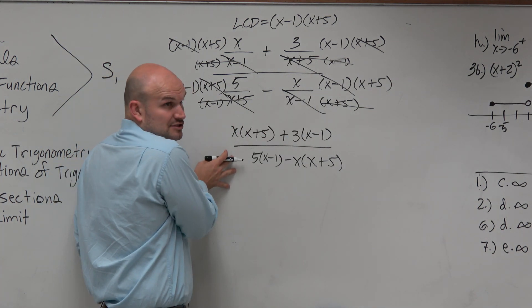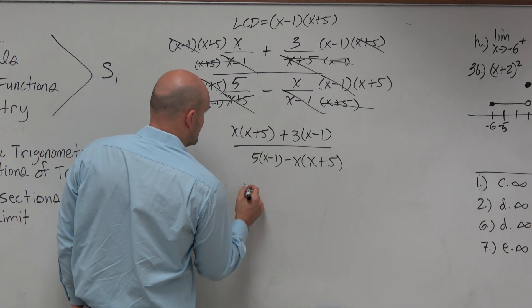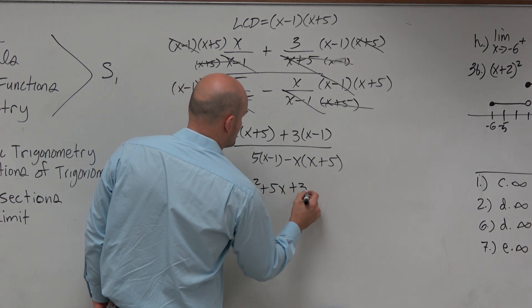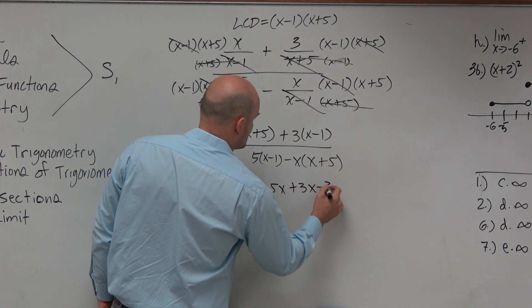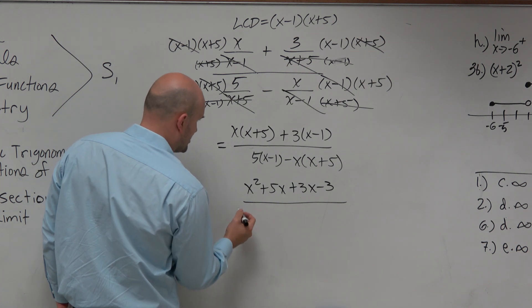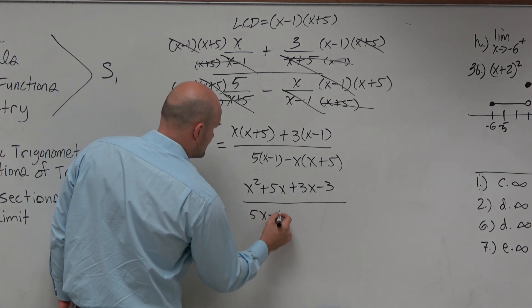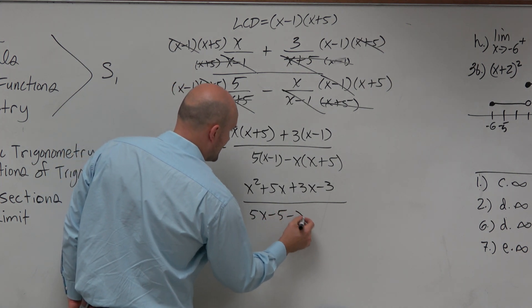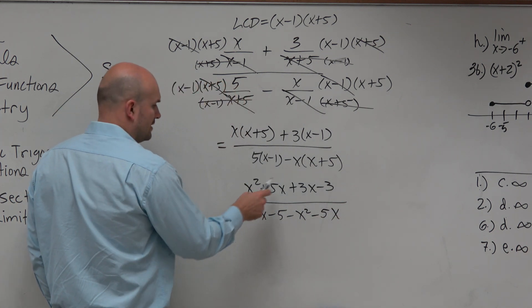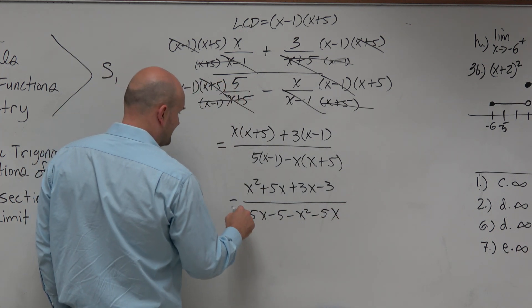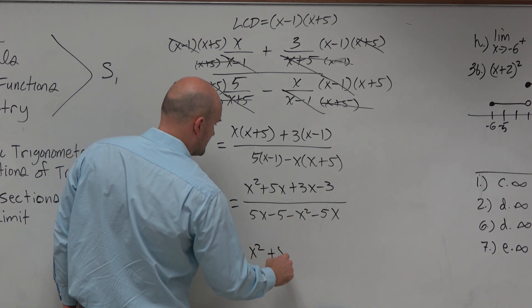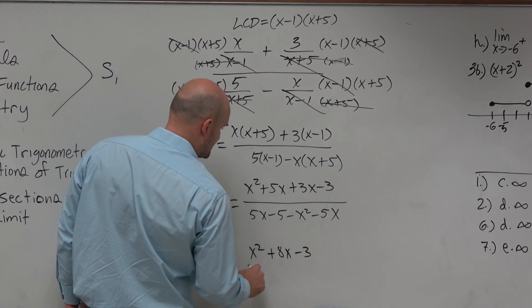Now, this isn't an answer choice, so let's simplify this. x squared plus 5x plus 3x minus 3 — you're going to want to make sure we're careful with our distributive property — 5x minus 5 minus x squared minus 5x. We can simplify this one more time, combine like terms, and see if we get an answer.